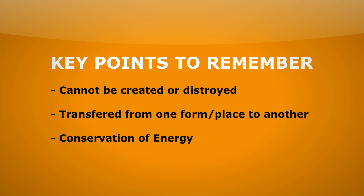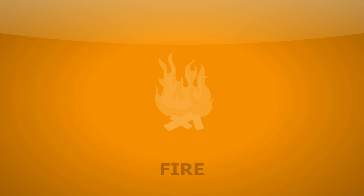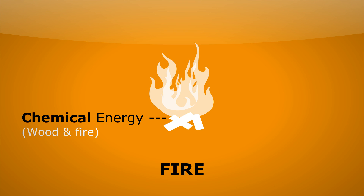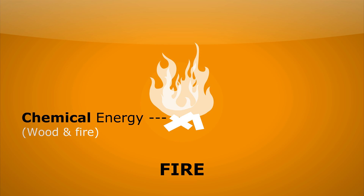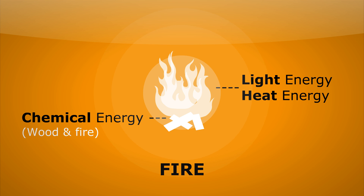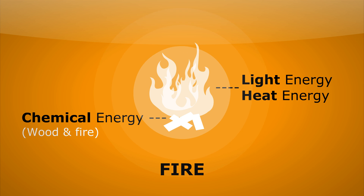Knowing this, let's have a look at some of the examples from before. Here's the fire again. We now know that chemical energy is stored in the wood in the fire, and what's actually happening is that chemical energy is being transferred to the surroundings as light energy and heat energy.